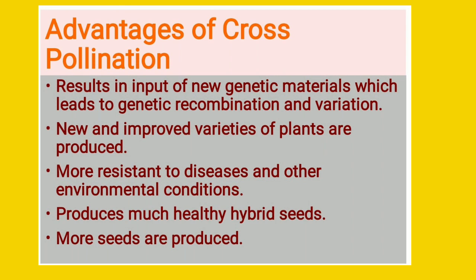New varieties of plants can be produced by cross pollination. The third advantage is that cross-pollinated flowers are more resistant to diseases because of the genetic recombination taking place, making them resistant to diseases, flood, or any kind of adverse environmental conditions. The fourth advantage is that cross-pollinated flowers produce much healthier hybrid seeds, so we can develop hybrids from cross pollination, and more seeds are produced.